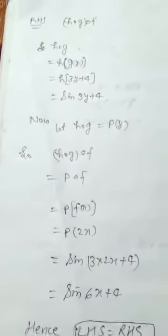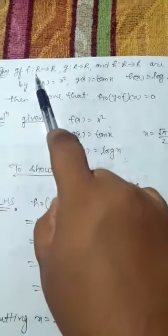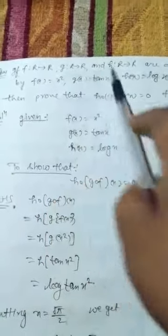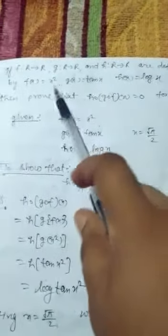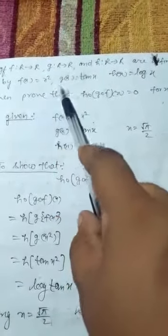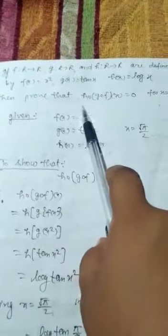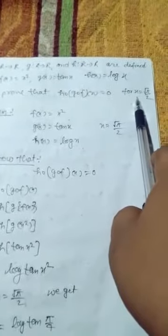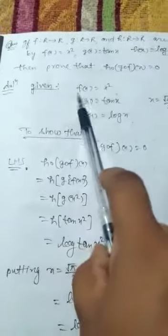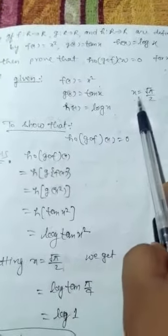Now comes the third question: if f, g, and h are defined from R to R by f(x) = x², g(x) = tan x, and h(x) = log x, then prove that h(g(f(x))) = 0 for x = √(π/2). Given f(x) = x², g(x) = tan x, h(x) = log x, and x = √(π/2).